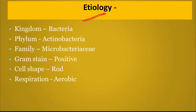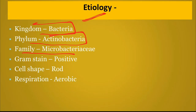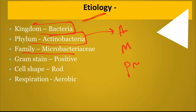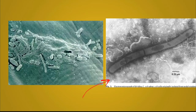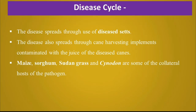Etiology: Leifsonia xyli belongs to kingdom Bacteria, phylum Actinobacteria, and family Microbacteriaceae. Plant pathogenic bacteria belong to three phyla: Actinobacteria, Mollicutes, and Proteobacteria. Leifsonia xyli is a gram-positive, rod-shaped bacterium. It respires aerobically.